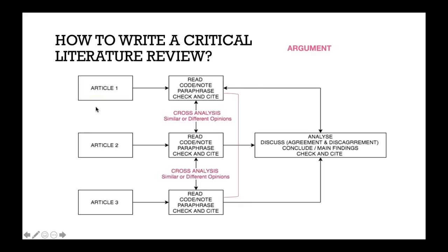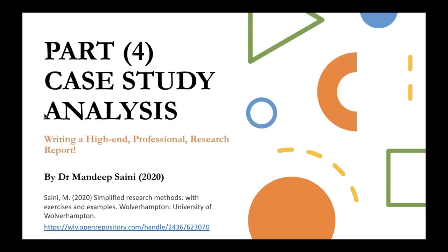That was a simplified example of writing a critical literature review. It becomes more complicated as the number of articles increases, but for at least one argument, I would suggest reading three to five different articles or books and coming up with one argument or conclusion. Thank you for watching. In the next video we will talk about case study analysis — this is the Simplified Research Method series. Thank you and see you soon, bye.